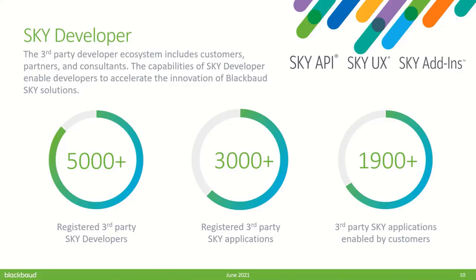Let's look at some of the numbers behind that quote. We now have over 5,000 registered Sky Developer accounts on the platform, not including any Blackboard staff. A Sky Developer account can be registered by customers creating something for their own organization, partners hoping to create something for many organizations, or individual consultants hired to build something specific. From that pool of developers, we now have over 3,000 applications registered, of which about 1,900 actually connected to customer environments. The growth is really encouraging — we're still getting over 30% growth year over year.